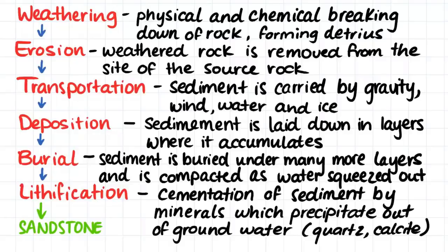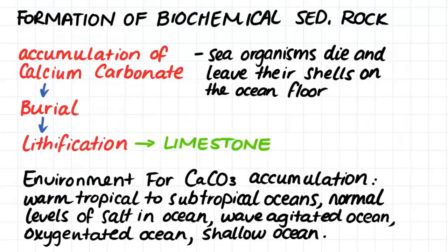An example of clastic sedimentary rock is sandstone. Slightly different processes are used in the production of biochemical, organic, and chemical sedimentary rock, but firstly biochemical sedimentary rock. Biochemical sedimentary rock forms when sea organisms die and leave their shell remains on the ocean floor where they can accumulate over time. These shells are made up of calcium carbonate, or CaCO3. The conditions which are ideal for the collection of this calcium carbonate is often called a carbonate factory.